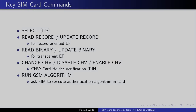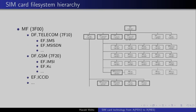The SIM commands include: select file (from the example), read record, update record, read binary, update binary. Then we have CHV commands — CHV is card holder verification, which is ETSI language for a PIN. So there's change PIN, disable PIN, enable PIN — which is exactly what your phone performs when you disable or change the PIN. And last but not least, run GSM algorithm. Remember, this is still the 2G-only SIM — we haven't gone beyond 2G yet. And there aren't really that many more commands — that's really it.